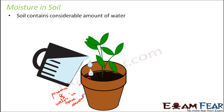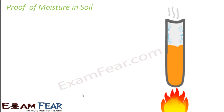Moisture in soil varies from one type of soil to another. Before we talk about the moisture in different types of soil, let us do a very simple and small experiment to prove that moisture exists in soil. Many of you might say that if you do not put water to the soil for a long time, there will be no moisture in it.